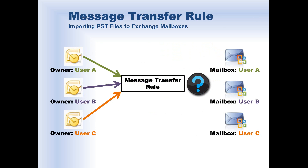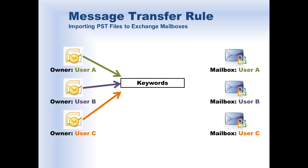The second step in the process is to assign a transfer destination. MailAttender supports a special rule type called a message transfer rule that facilitates the transfer of email messages from one email store to another. The transfer destination is dynamically assigned based on keywords, allowing you to assign different transfer destinations to all of your PST files with one assignment instead of per PST file. Since we're not listing an individual Exchange mailbox as a specific destination, we refer to this as an indeterminate mailbox destination.